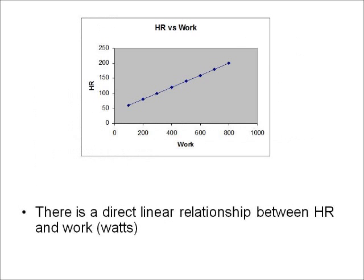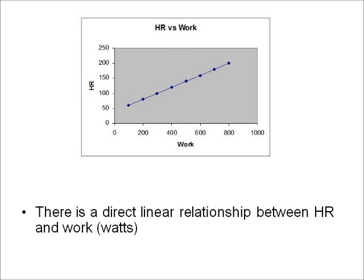Next slide is heart rate versus work. There is a direct linear relationship between heart rate and work. Next slide: stroke volume versus work. Stroke volume is the volume of blood ejected per beat. Stroke volume increases with increases in work rate until reaching 50% of work rate max or VO2 max, then stroke volume plateaus.